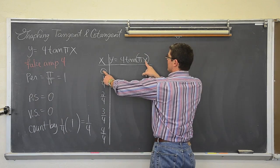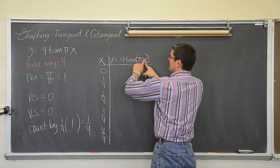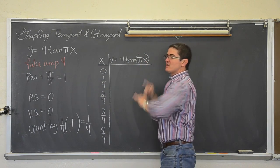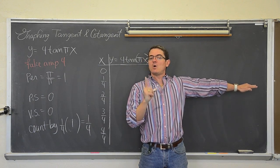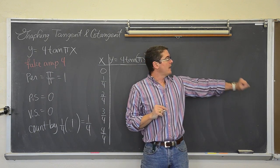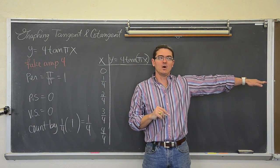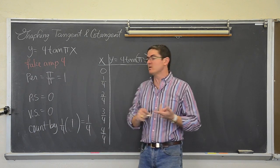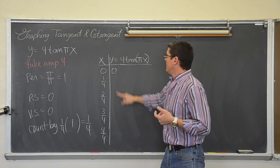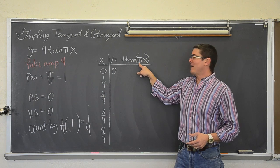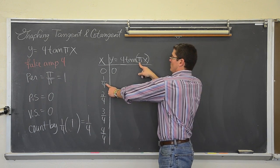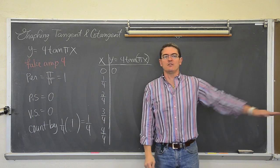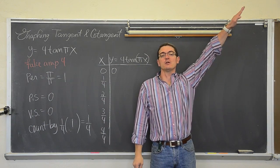If we plug in zero: zero times π is zero. The tangent of zero — remember tangent is y over x — at zero, y is zero and x is one, so it is zero. At one-fourth, plugging in x = 1/4 gives π/4. The tangent of π/4 is 1.